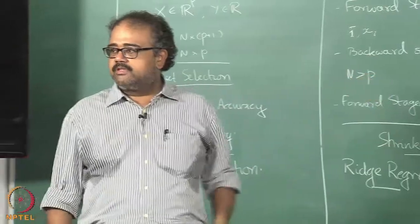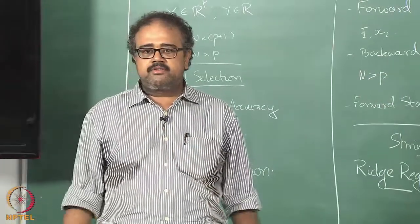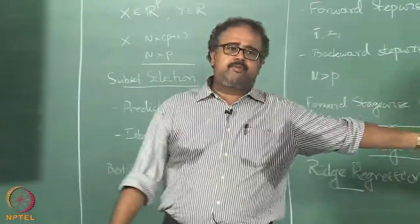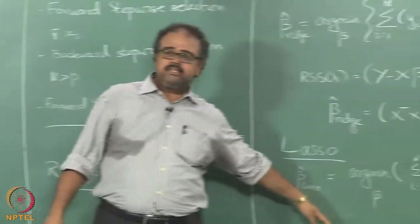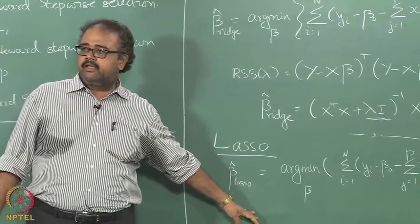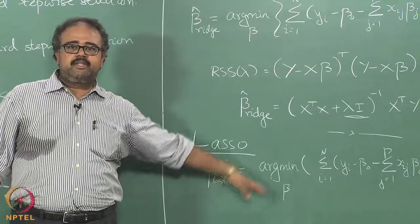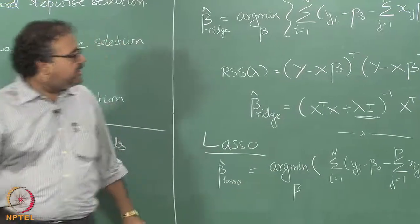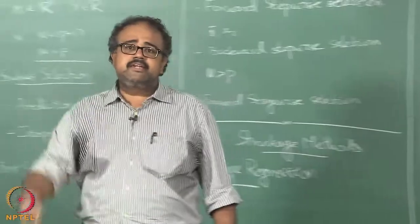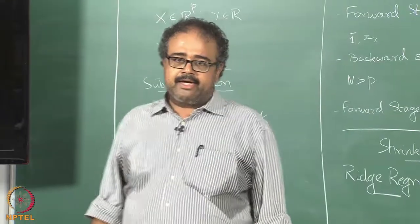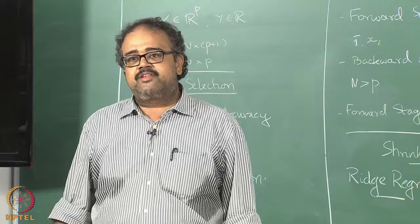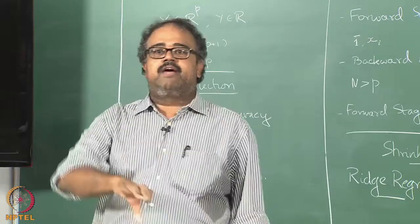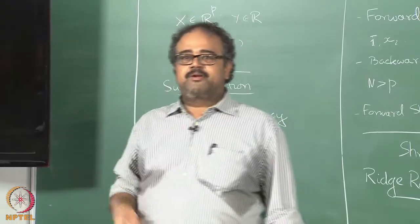Lasso is essentially just the norm of the absolute value of the betas — you sum those up and you want to keep them constrained. You can write the same constraint formulation: sum of |beta| must be less than some t. Or you could write it in the penalized formulation. To impose a constraint on each individual beta would require you to know something about the variables themselves beforehand.